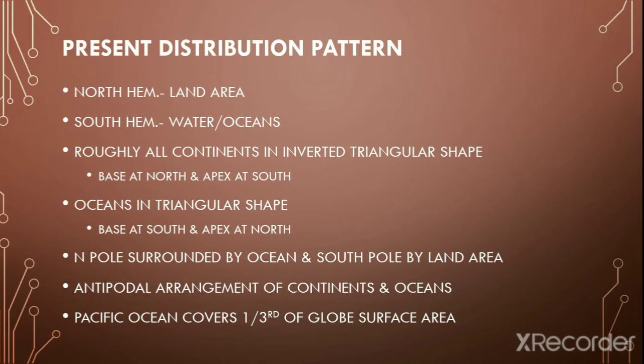The north pole is surrounded by ocean water, while the south pole is surrounded by land area. There exists an antipodal arrangement of continents and oceans — almost 56% of oceans are situated opposite to the land area, and 95% of the land area is situated opposite to the water bodies. Last but not the least, the Pacific Ocean occupies one-third of the surface area of the globe.